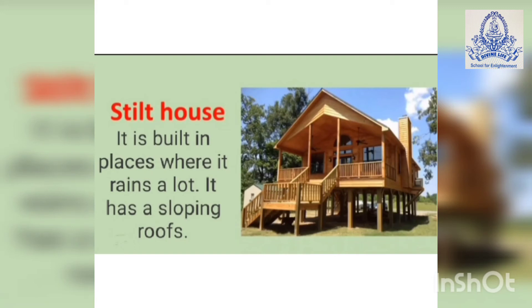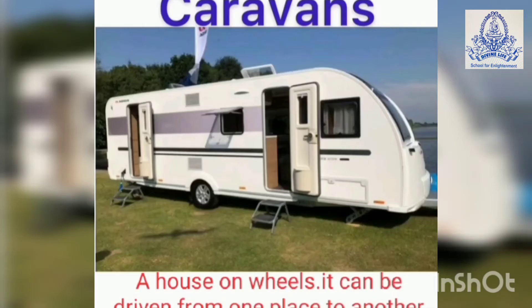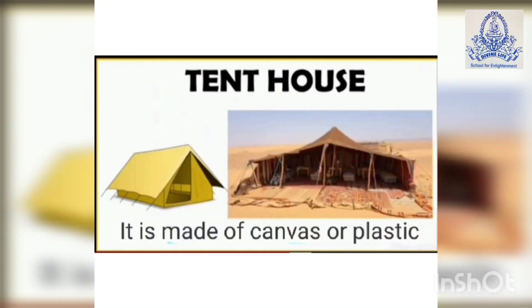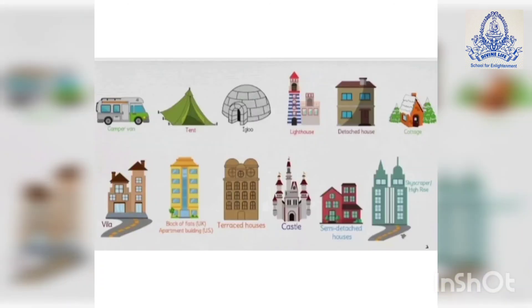Stilt house — it is built in places where it rains a lot and has a sloping roof. There are some special houses. Houseboat — it is a floating house. Caravan — a house on wheels that can be driven from one place to another. Tent house — it is made of canvas or plastic, it is a foldable house and we can carry it when we go for a picnic. Igloo — it is made of ice.